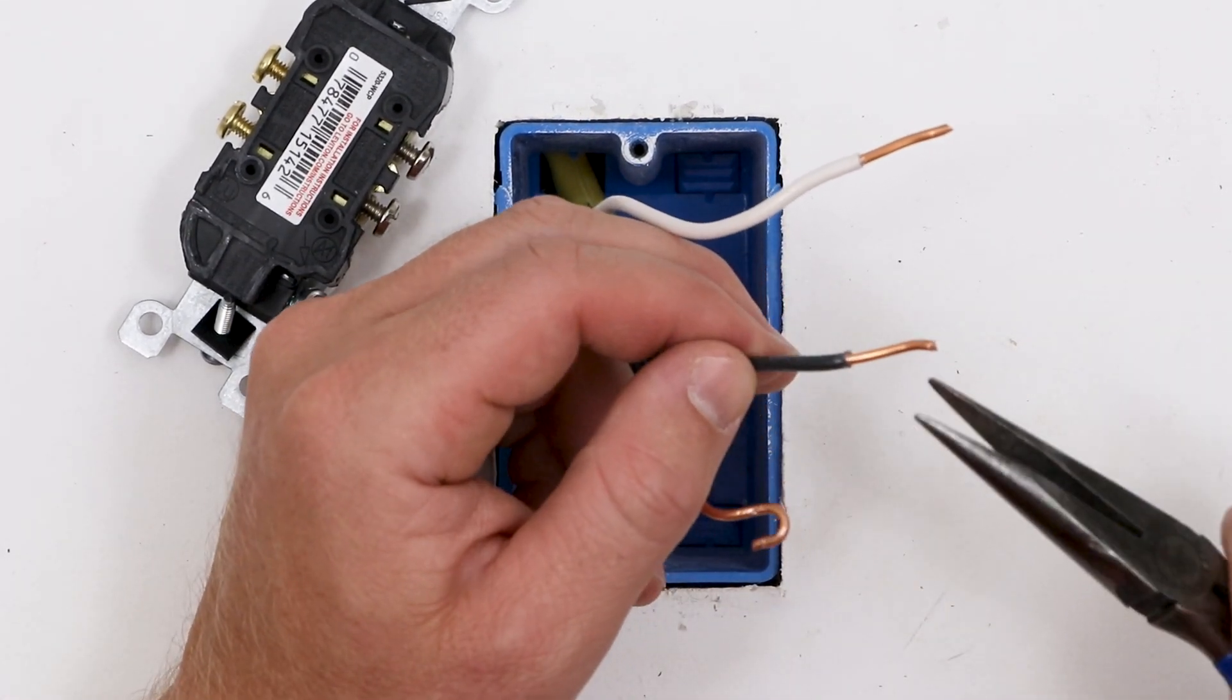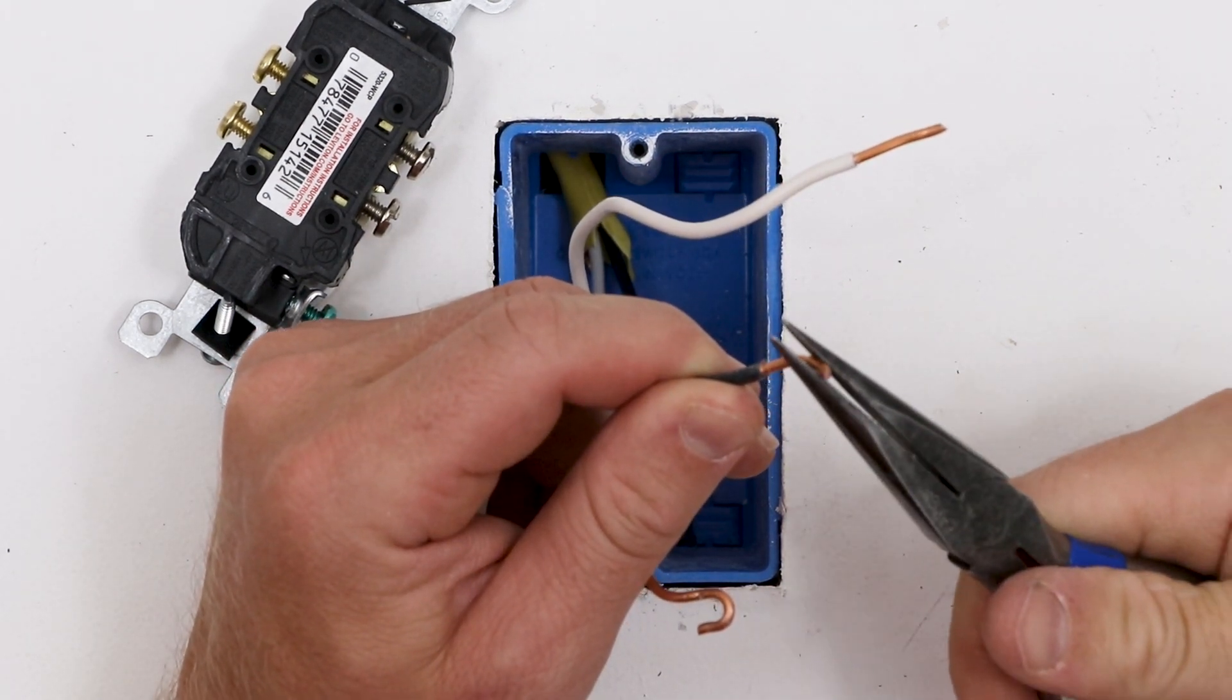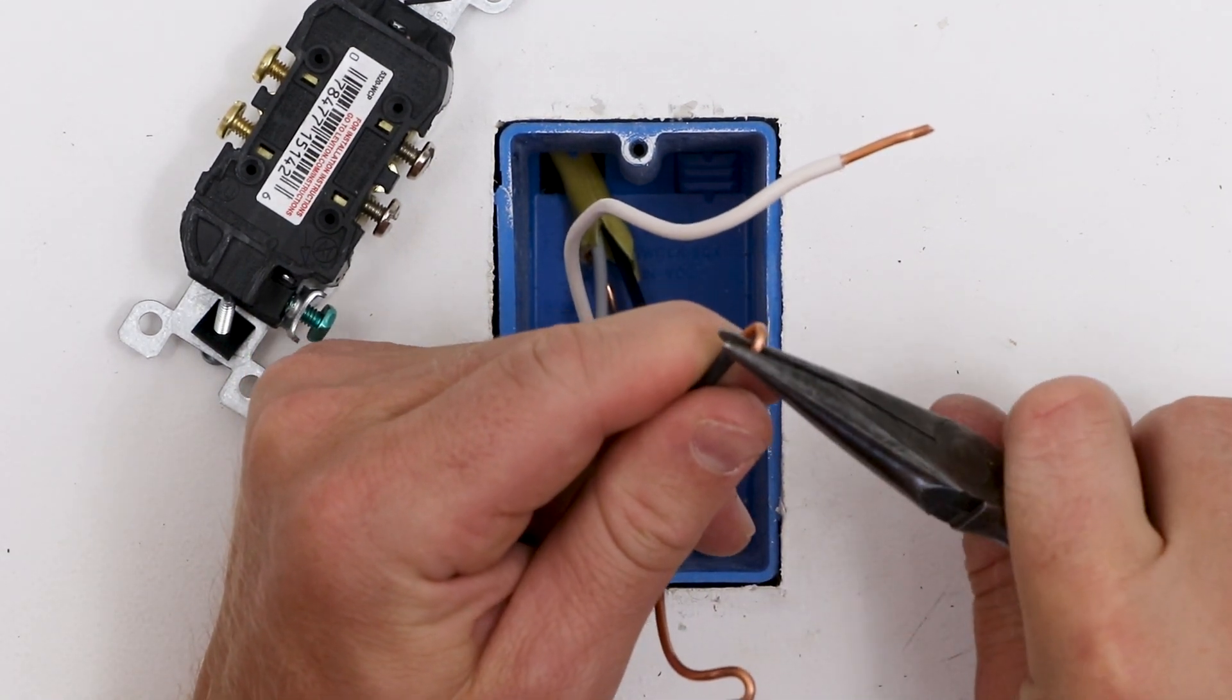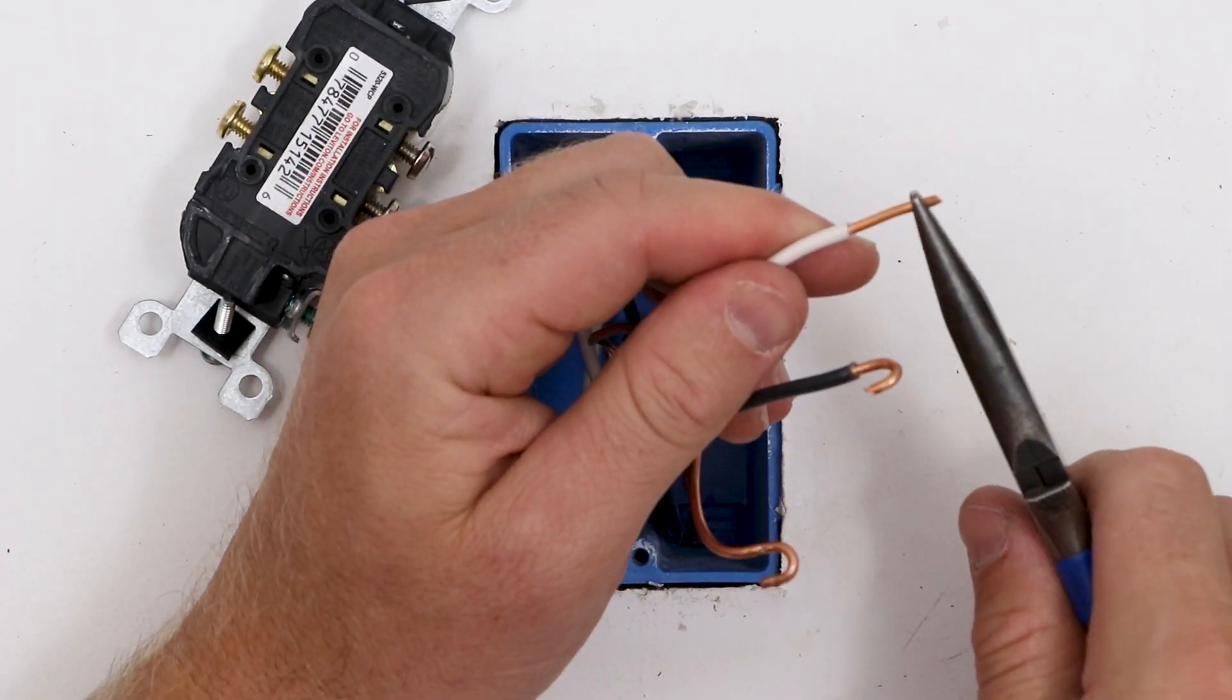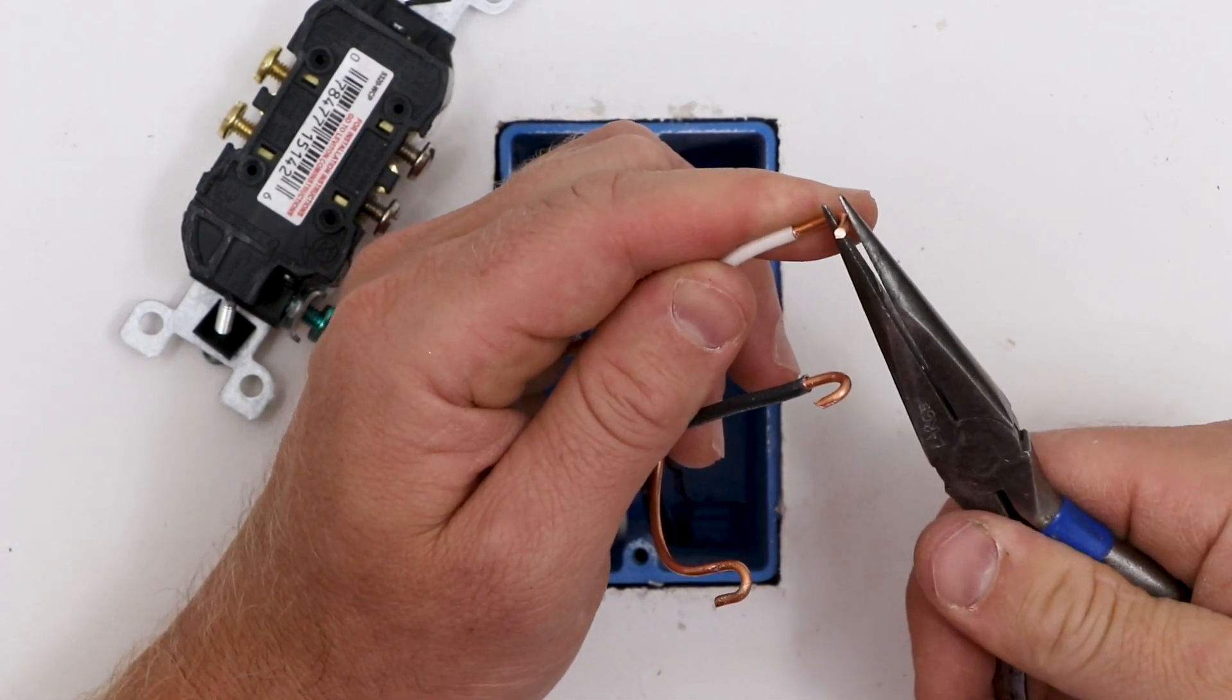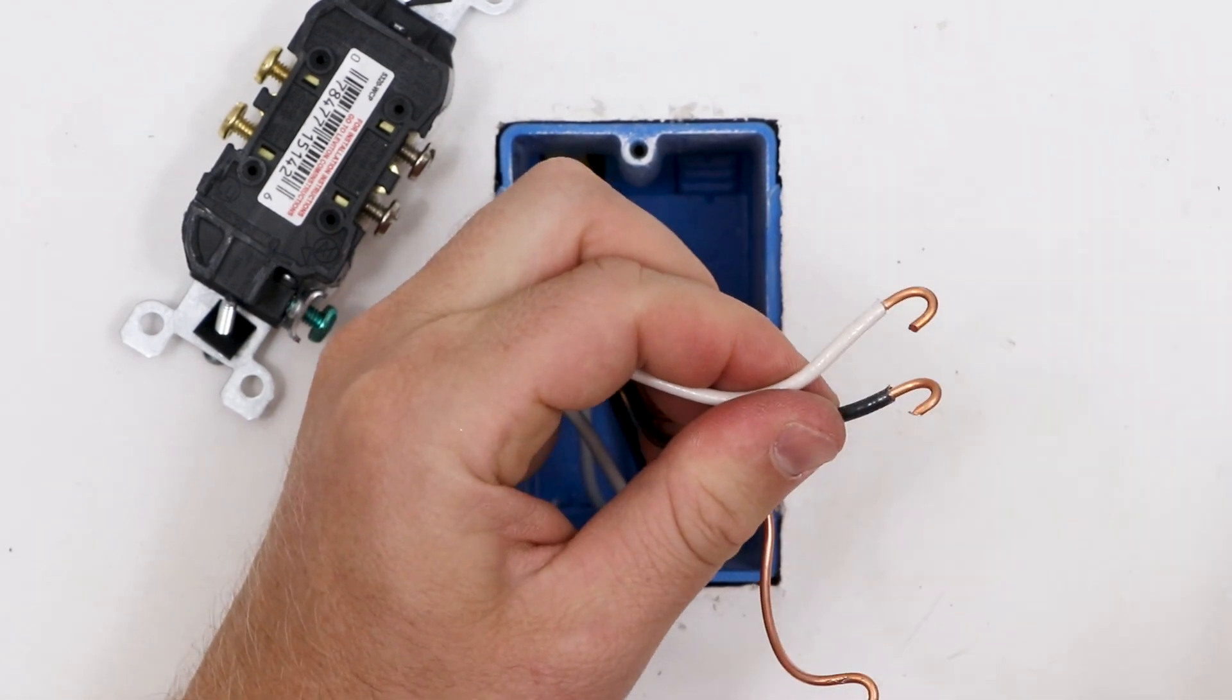Putting these C-shaped loops on the end of the wires is something you get better at over time because you want to be able to wrap it to a certain size so it fits just around that terminal screw. And it's not too tight because then it's hard to get onto the screw and it's not too loose because then it won't connect securely to the screw. So I kind of just go slow, grab and turn, and you just get a feel for it over time.